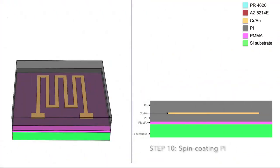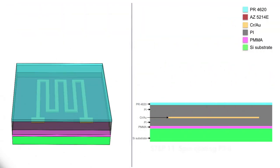We then spin coat another layer of polyimide as a top encapsulation layer. We now need to pattern the polyimide layers and define our encapsulation geometry around our sensor pattern.